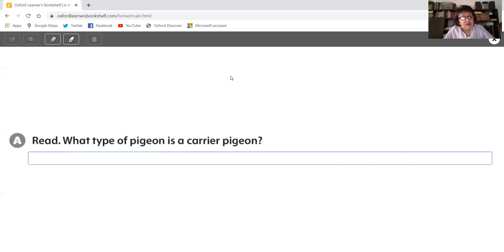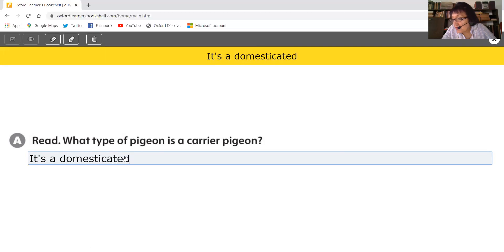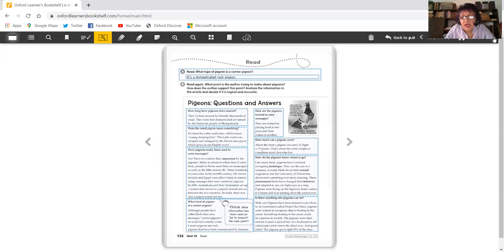So let's answer the question in exercise A. What type of pigeon is a carrier pigeon? It's a domesticated rock pigeon. You can see the answer at the top of the page in blue. All the things that I type are at the top of the page in yellow. So that's the answer for letter A. Now let's look up before we turn the page. Look at this postage stamp. It's from the U.S. Coast Guard's search and rescue. Wow.